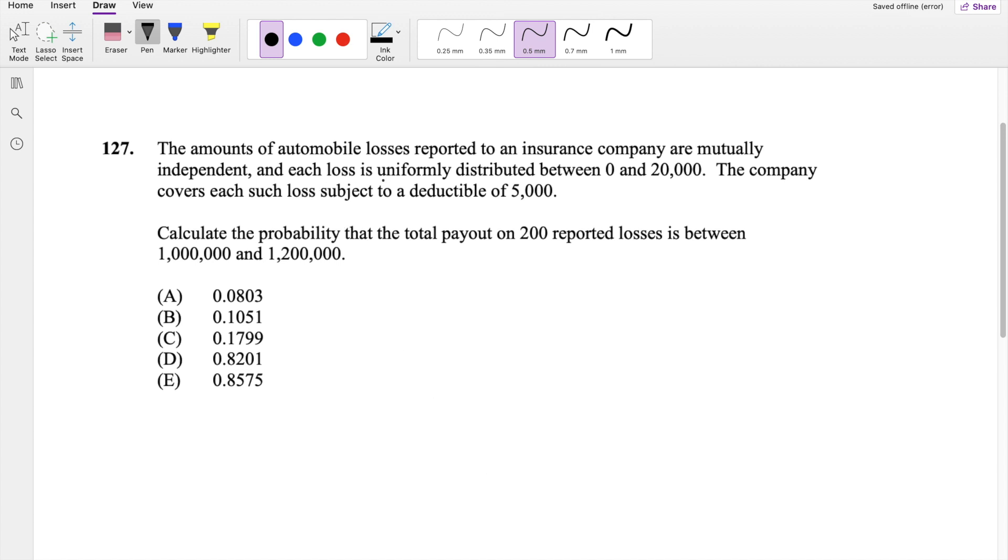The amounts of automobile losses reported to an insurance company are mutually independent, and each loss is uniformly distributed between 0 and 20,000. The company covers each loss subject to a deductible of 5,000. Calculate the probability that total payout on 200 reported losses is between 1,000,000 and 1,200,000.